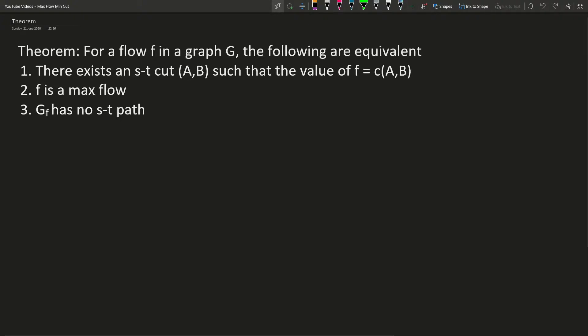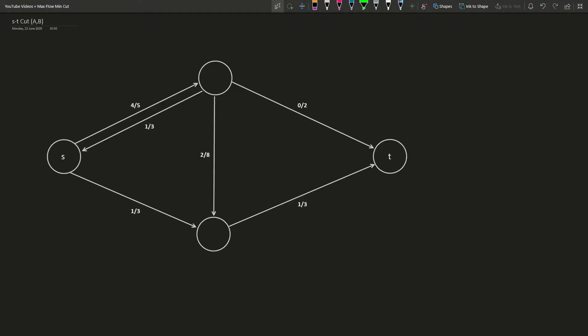The max flow min cut theorem follows from the following theorem, which we will prove in a second. Note that if this statement is true, Ford-Fulkerson indeed calculates the max flow if it terminates, as point 3 is exactly the break condition and the claim is that this is equivalent to point 2. Before we prove the theorem, we must first understand what an ST cut is.